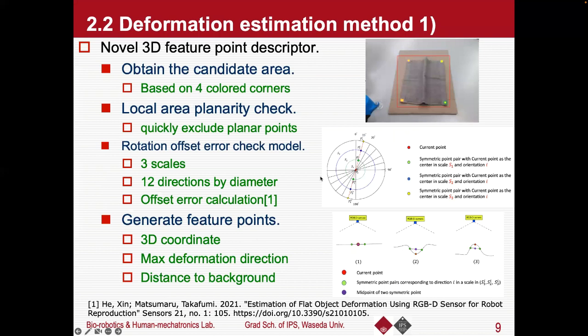The first part is our deformation estimation method and it includes a novel 3D feature-point descriptor. To apply it, firstly, we obtain a candidate area which contains all the 3D points of the object. Then a local area planarity is calculated to quickly exclude the planar points. And for the remaining points, a rotated offset-error checking model is applied from three scales and twelve directions. It checks the offset-error, which is proposed in our previous work, to decide whether a candidate point belongs to a major deformation. Finally, we generate a set of 3D feature points for the next step.